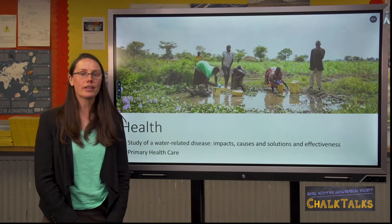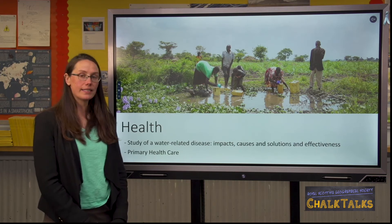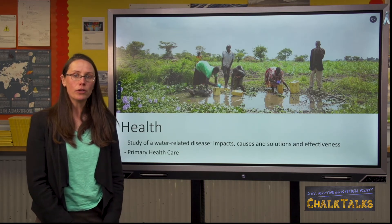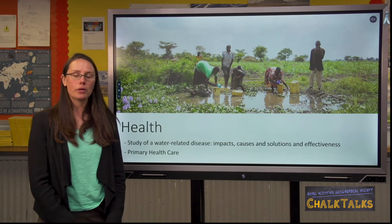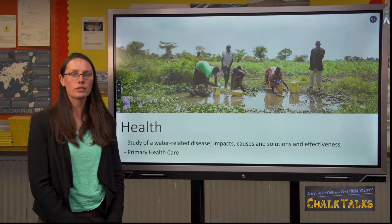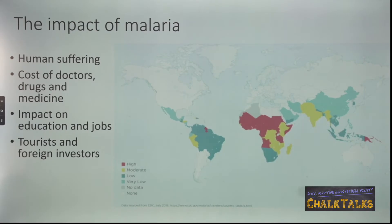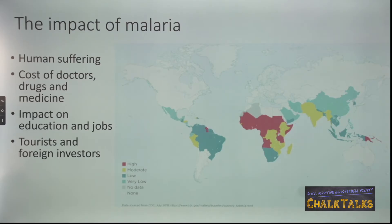Now we're going to look at the next part of this topic: health. For the water-related disease, I'm going to look at malaria. You may not have studied malaria, but it will still give you an idea of the level of detail you need to include. In the exam, you may be asked about the benefits of being able to control the disease or alternatively the costs of not doing so, and these are huge for both individuals and for countries.